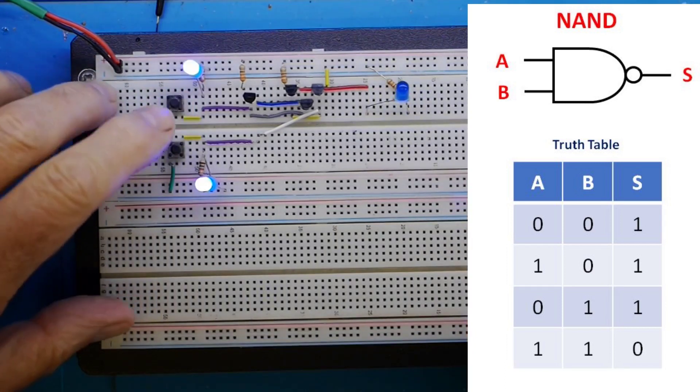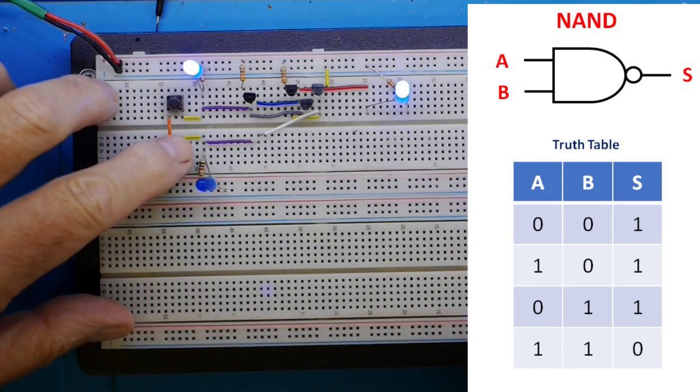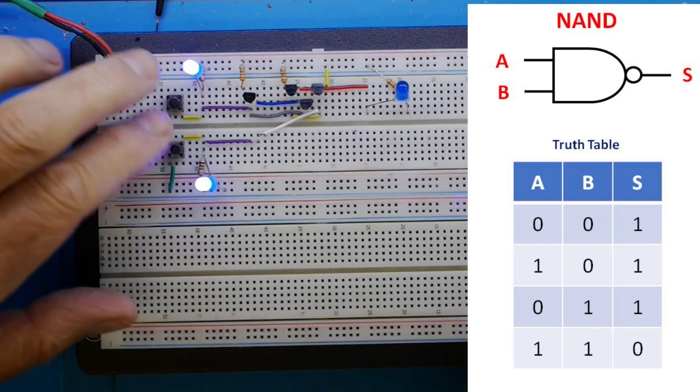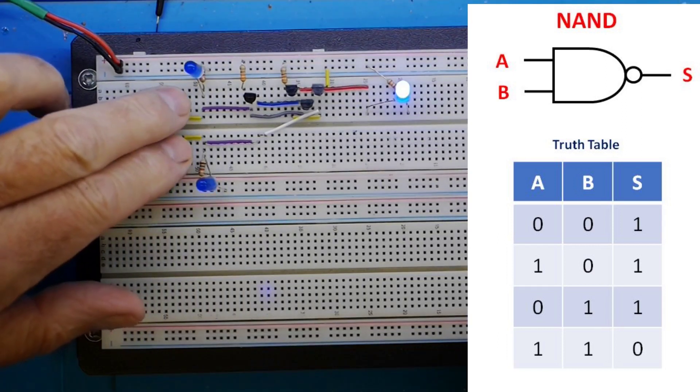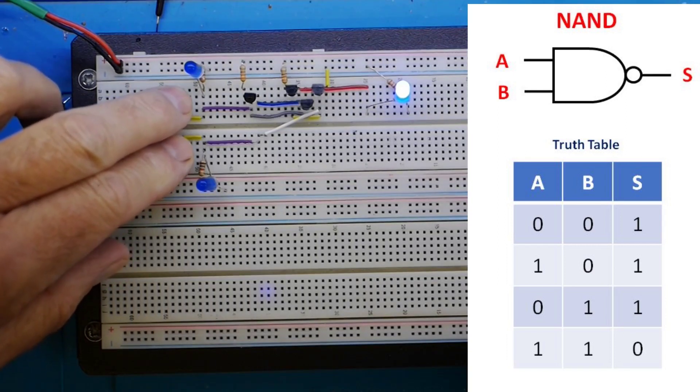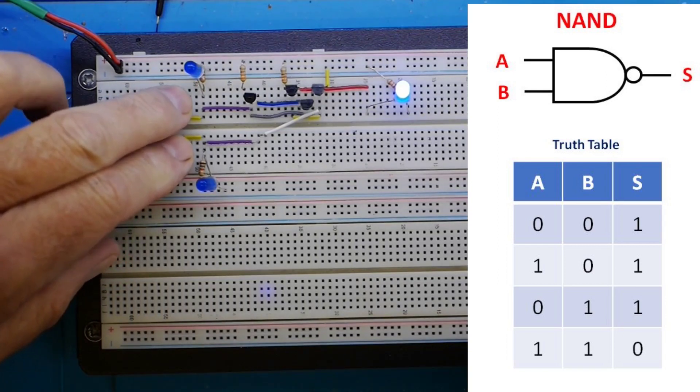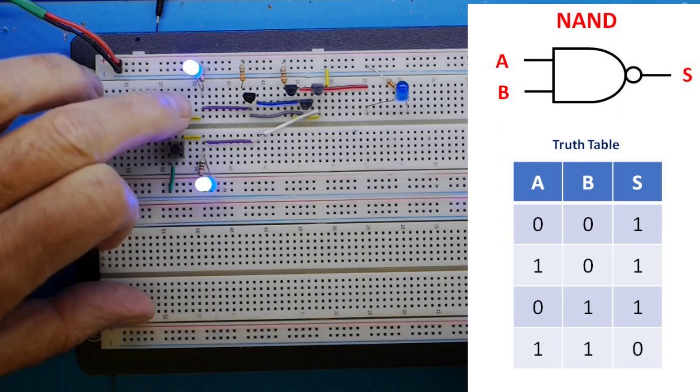That's correct. Let's try a second input. Yeah, that's the same. And finally let's try both. So both inputs low results in output being high. So that confirms correct operation of NAND.